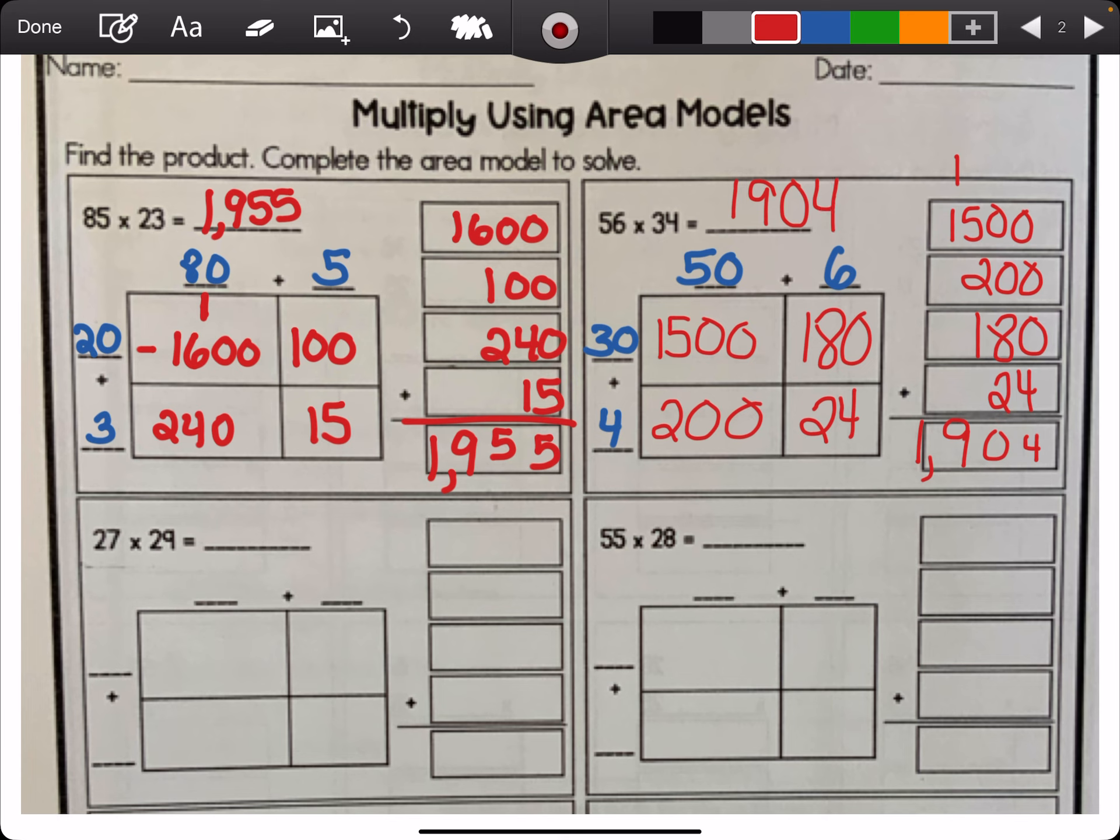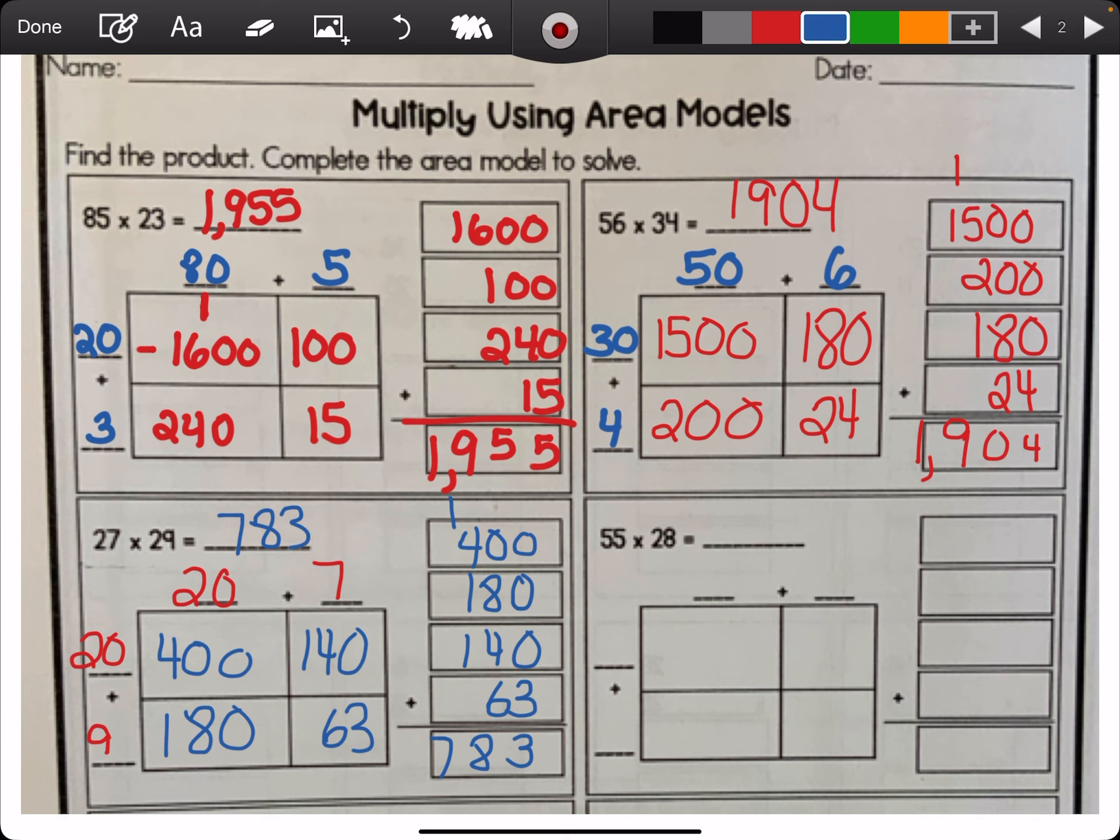Now, I will do another one. I'll do the 27 times 29. 20 plus 7 and 20 plus 9. Now, work carefully. 20 times 20 is 400. 20 times 9 is 180. So, I could write it in here as I'm putting the products in. Make sure my 0 looks like a 0. Now, 20 times 7 is 140. And 9 times 7 is 63. Need to know our facts. And now, let's add. 0, 0, 0, and 3 is 3. 8 and 4 is 12, and 6 is 18. 1 and 4 is 5, and 1 is 6, and 1 is 7. So, you have 783. I'm not going to check it, the standard algorithm, for time. But, you can do that on your own as well.